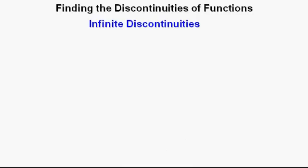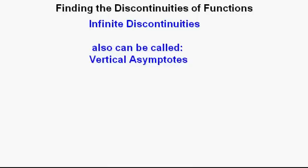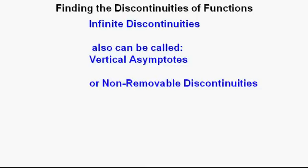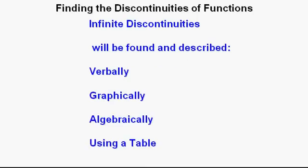What we are mostly going to look at in this lesson are infinite discontinuities and point discontinuities. We will start with infinite discontinuities, which can also be called vertical asymptotes or non-removable discontinuities. We will find and describe these discontinuities verbally, graphically, algebraically, and by using a table.